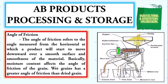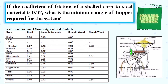In getting the angle of friction of a certain product, we have a table that is necessary to determine the coefficient of friction for certain agricultural products. We have the list of crops from the first row of the table, and the other rows show certain materials with their distinct coefficient of friction. I will show you how this table is being used.